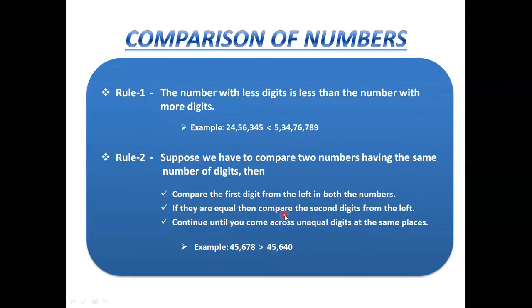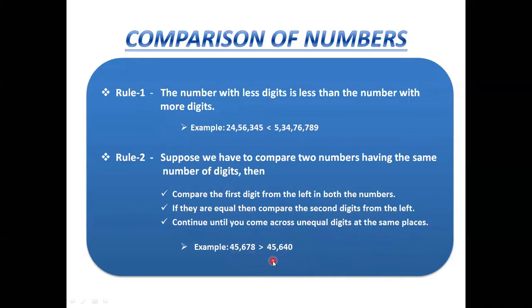Continue until you find unequal digits at the same place. The third digits are both 6 — equal, so move on. The fourth digits are 7 and 4. Since 7 is greater than 4, we conclude that 45678 is greater than 45640.